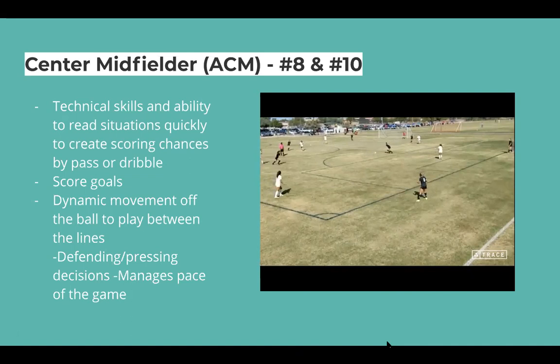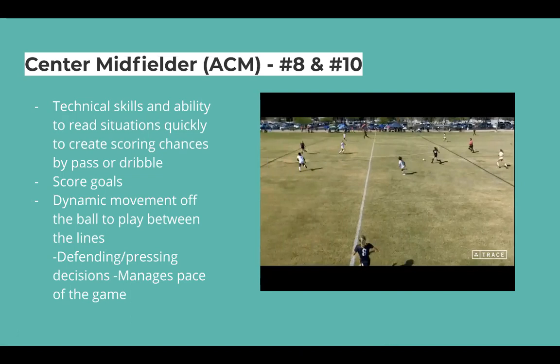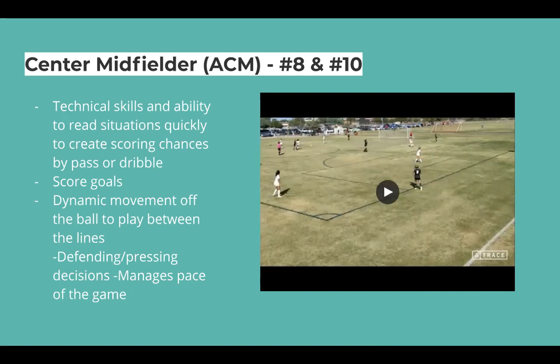Tens and eights are also responsible for scoring goals. If you remember Clint Dempsey when he was on the U.S. national team, he was one of the best eights that's ever played for our country — he scored goals from the number eight spot. He was that late-running eight that scored from distance and did all sorts of great things. You must show that you score goals. Shooting from distance is something eights and tens have to do, because that forces the other team to step and defend, which then allows you to play the killer pass to put the number nine, seven, or eleven in behind the other team.